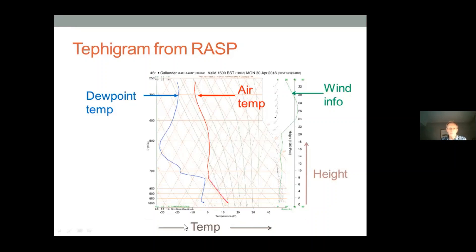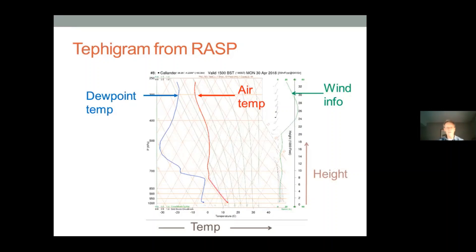Here's the first bit of tricky stuff tephigrams throw at you. On a normal graph, the temperature grid lines would go straight up, but on tephigrams they go off to the side diagonally. So the 30-degree line goes off diagonally to the upper right, the 20-degree line goes diagonally up to the upper right as well. It's a bit of a strange graph in that the vertical lines aren't vertical — they slope.